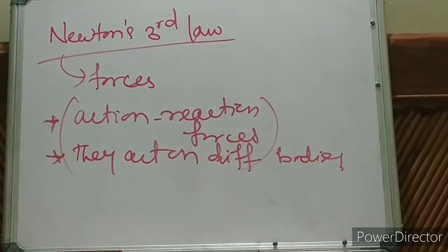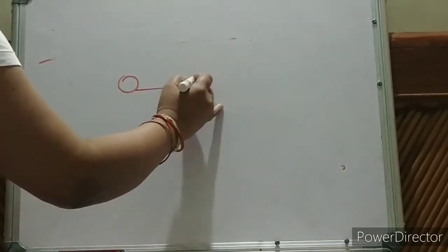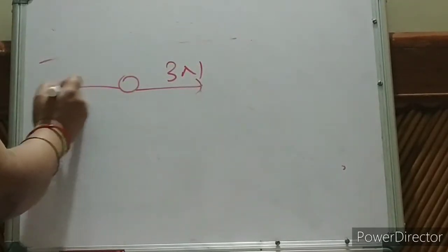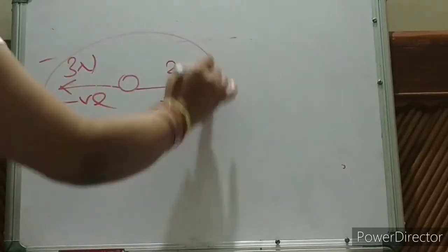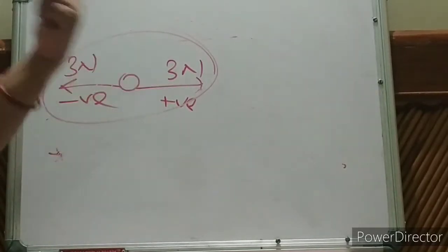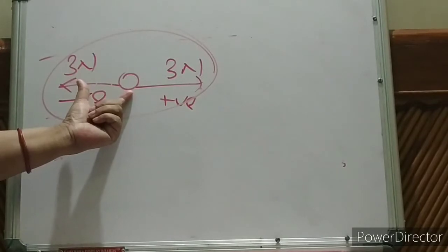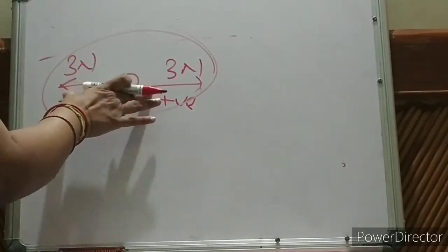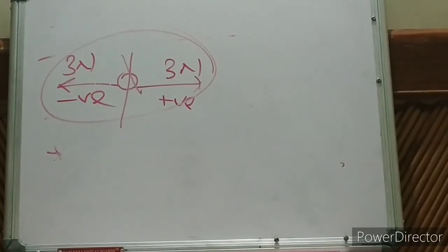Now let us try to understand what this means. To every action there is equal and opposite reaction — equal and opposite. Suppose an object is here and you apply a force of 3 Newtons. The equal and opposite force would be negative 3 Newtons. Then these two forces cancel out, meaning no acceleration — which would mean there is no acceleration in the universe. Is that possible? No. Actually these two forces are not acting on the same body; they act on two different bodies. We will discuss some examples to understand this point.